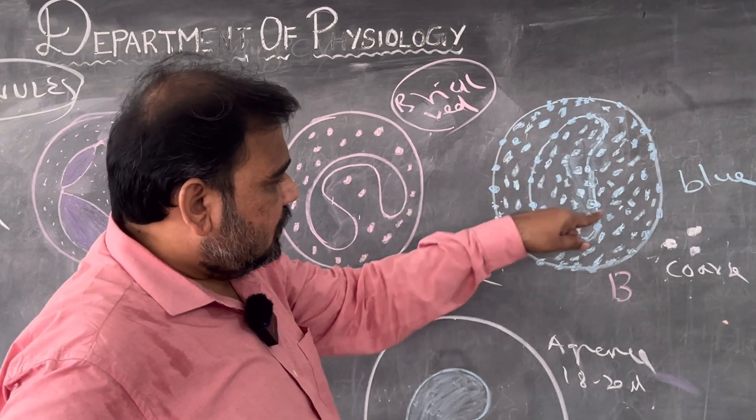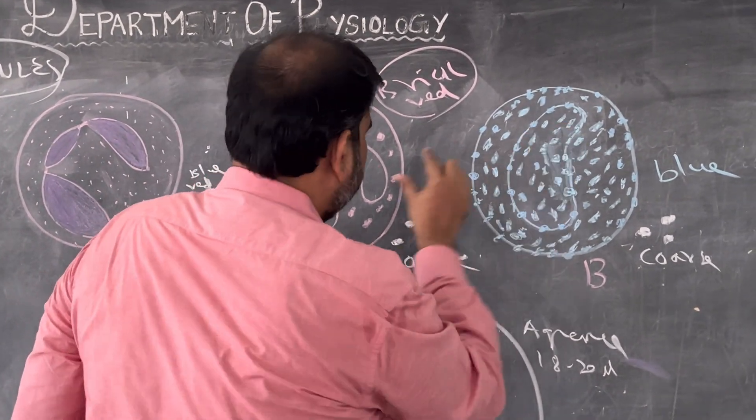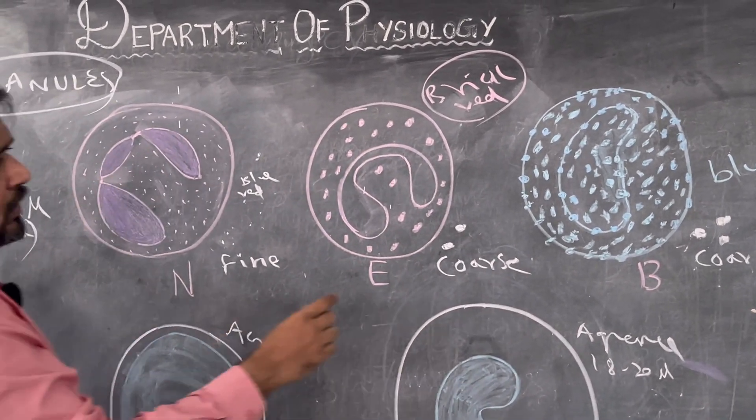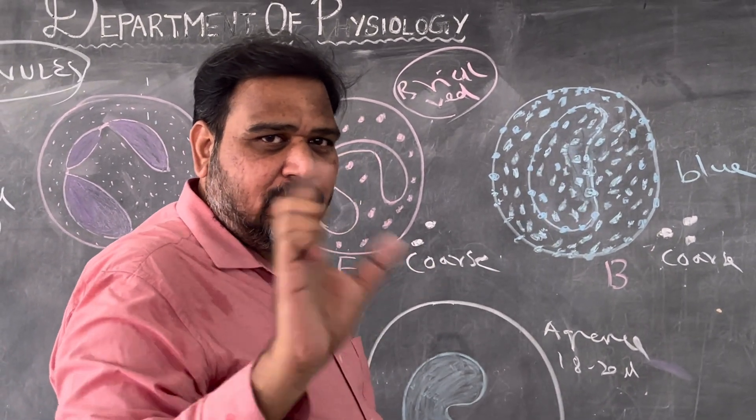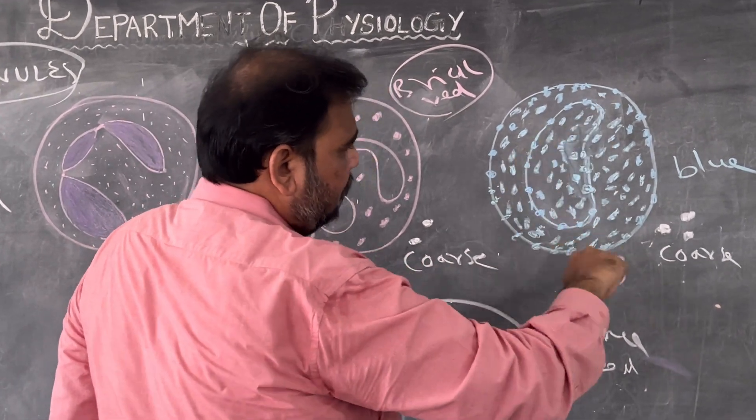And one more thing you can see here: the granules are so much that you see here. Whereas here the nucleus are able to see bilobed, here it is three lobed, here it can be single lobe or bilobed. But lobes you cannot differentiate much, but that is not the important point.